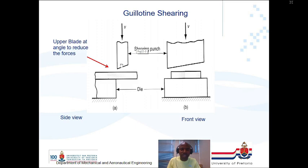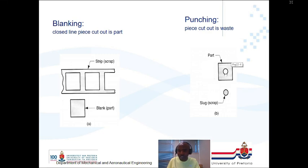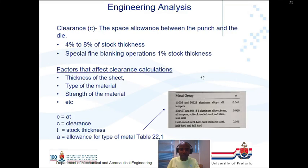For blanking, the part left on the metal after cutting is scrap. For punching, the small piece cut out is scrap — think of a paper hole punch where the small circle is discarded and you keep the paper. We will perform engineering analysis to cover the basic parameters needed when performing these procedures.